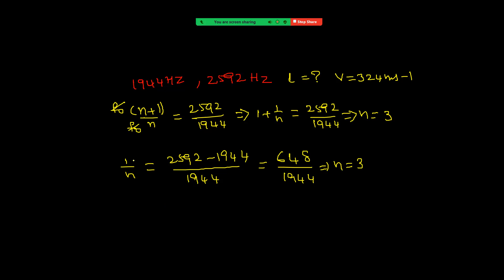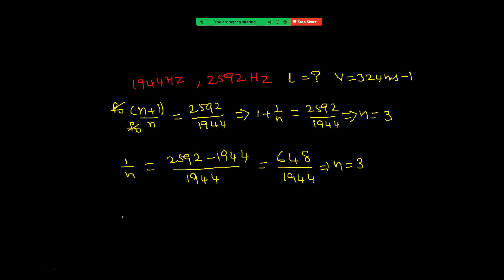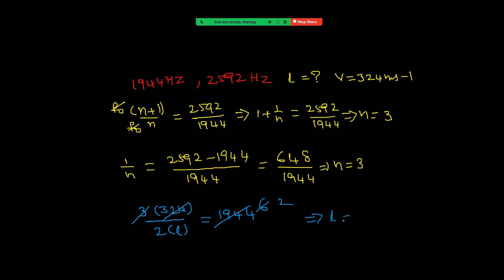Now we have to calculate the length of the pipe. Taking the third harmonic, we can write: frequency = n·V/(2L), so 1944 = 3 × 324 / (2L). Solving, 2L = 6 × 324 / 1944, giving L = 0.25 meter, or 25 centimeters.